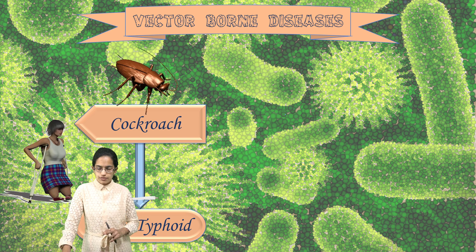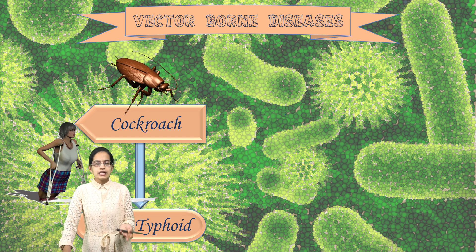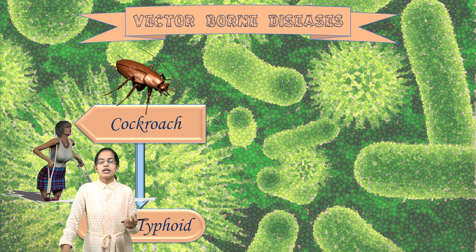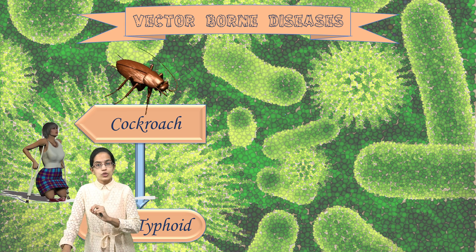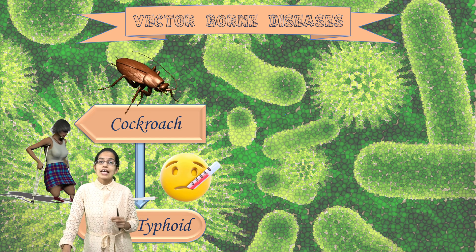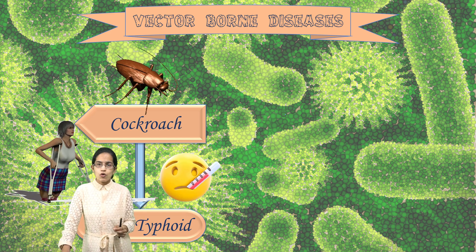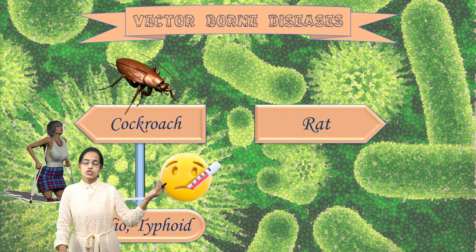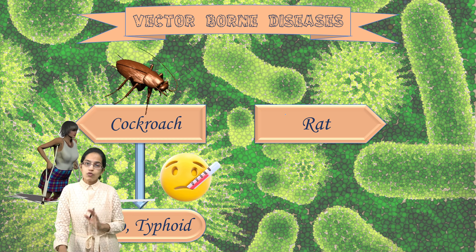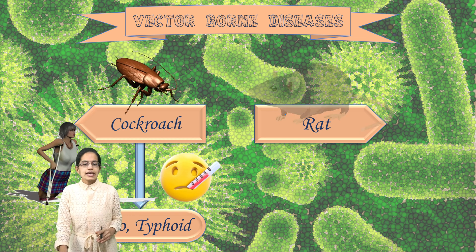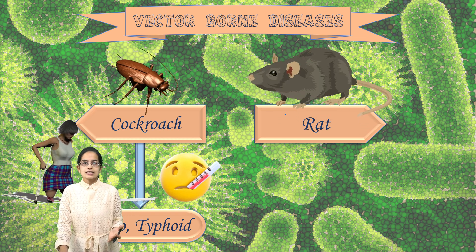To curb polio, we have two vaccines — the live and the attenuated vaccines — known as the Salk and Sabin vaccines. In India, we have the oral drops; however, in countries where polio has been eradicated, it is given in injectable form to avoid any transmission due to foreign migration.